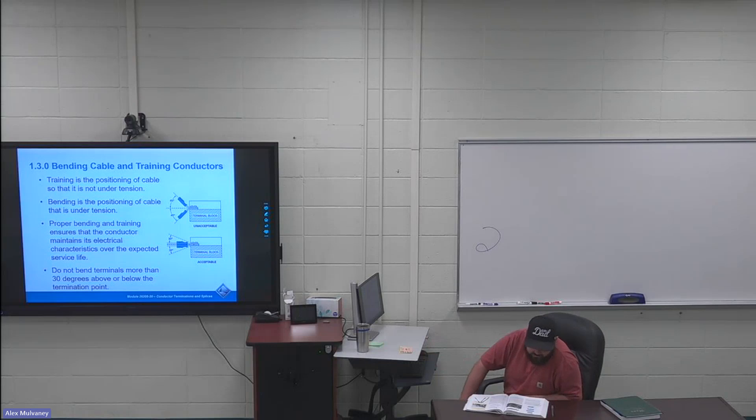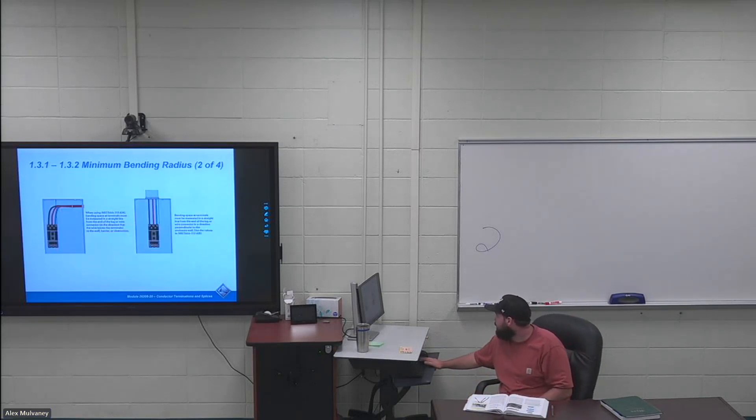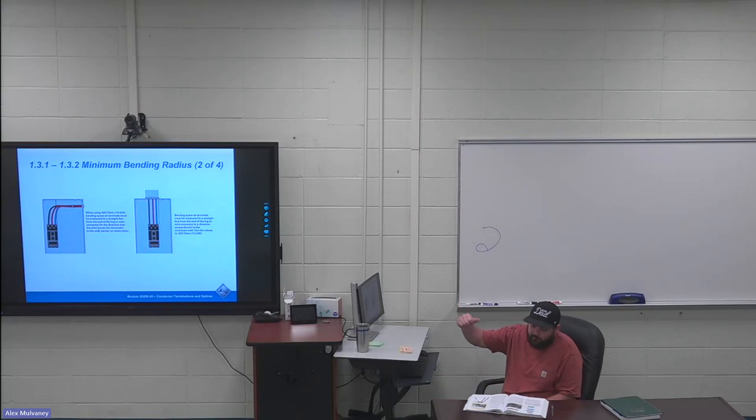First sentence in Section 1.3.0 on page 6 is highlighted. Training is the positioning of cables so that it is not under tension. So that's making sure that you're not, like you can see the picture on the board. Training wire. Looking at the picture on page seven in the top right, I would never want my wires pulled tight around the corner of that conduit. So I would bring them up and bend them so that there's no tension on the conduit or coming right inside the box, anything like that.